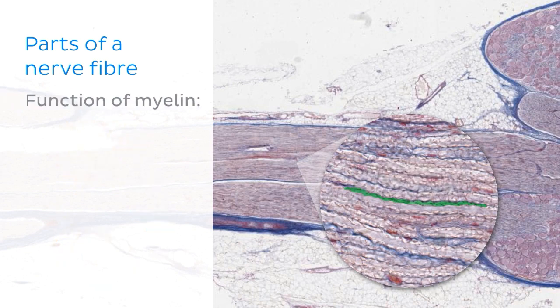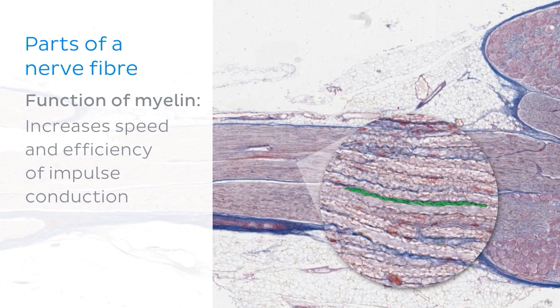So why is it there? Myelin increases the speed and efficiency of impulse conduction along the nerve. And this is pretty important, because the speed of that information could be the difference between life and death. The membranous component of myelin is the cell membrane of Schwann cells in the peripheral nervous system.